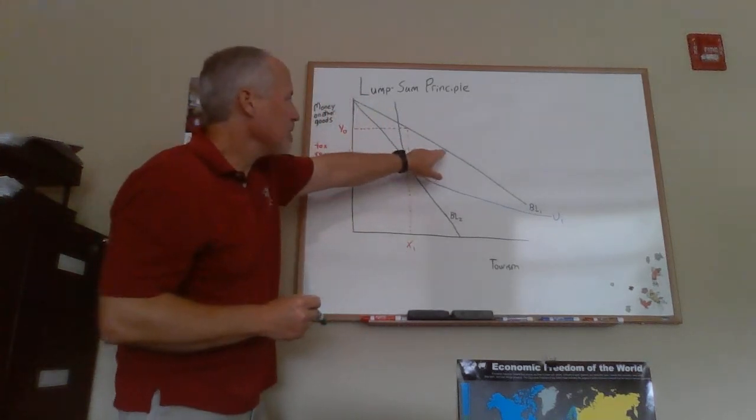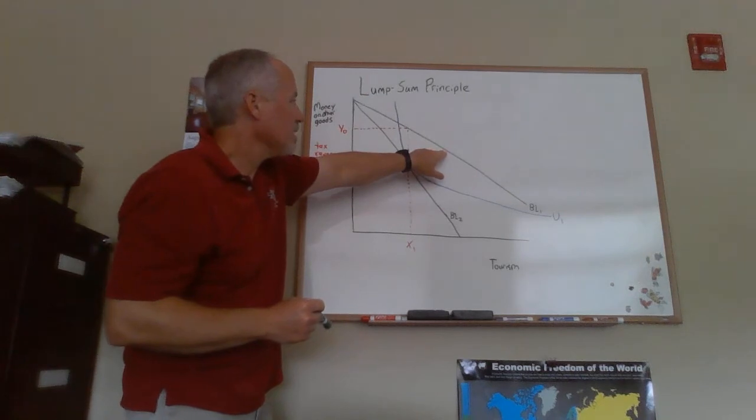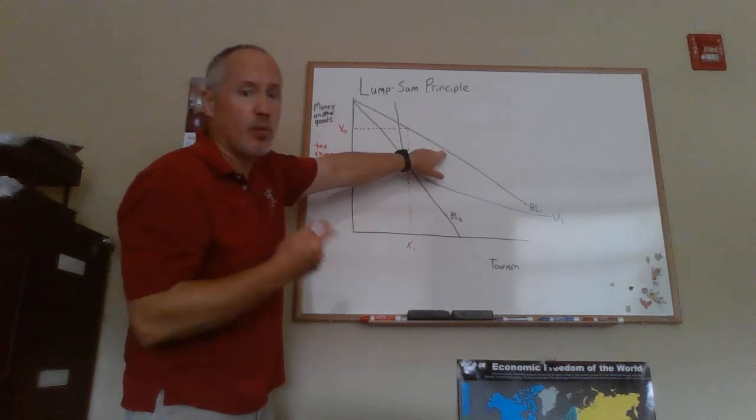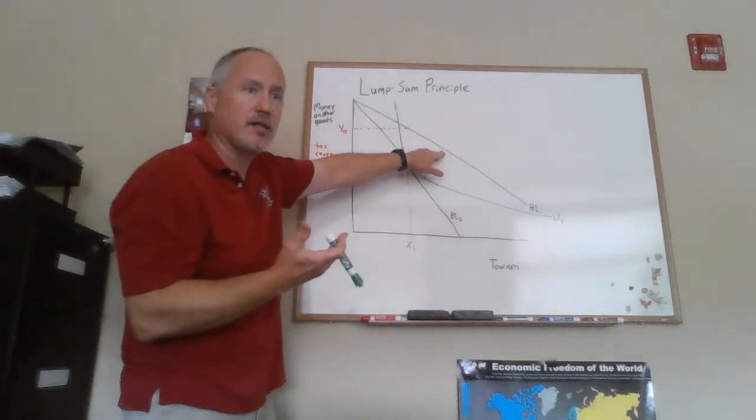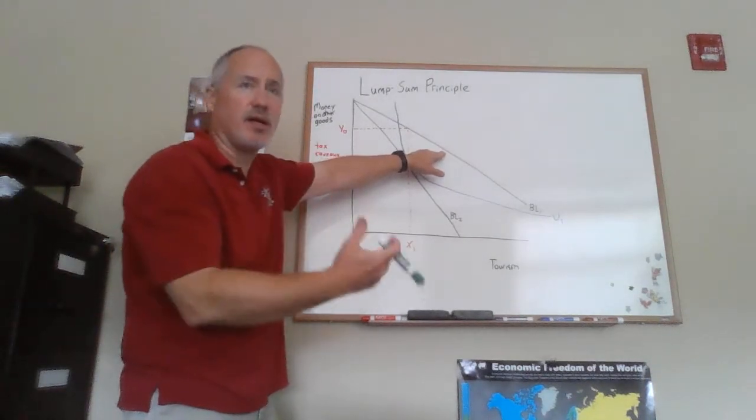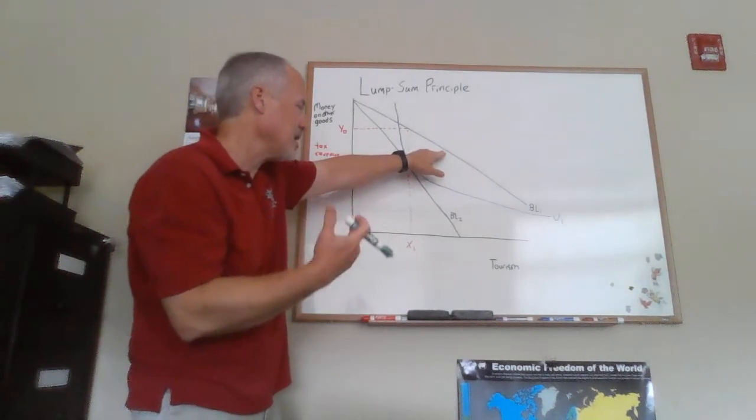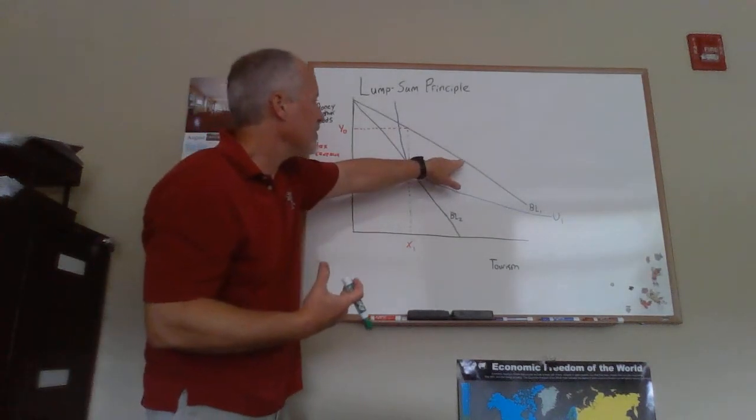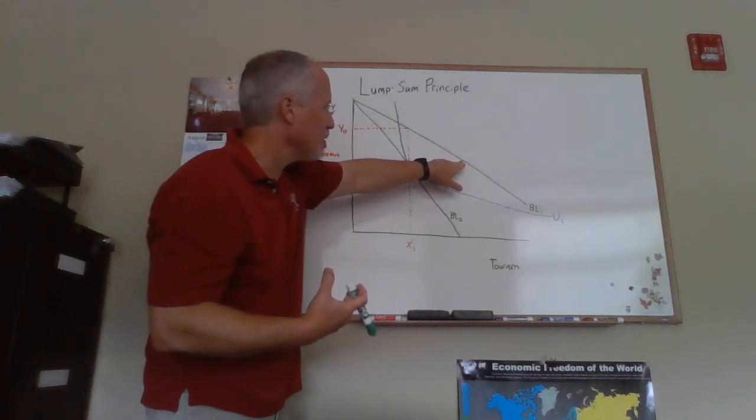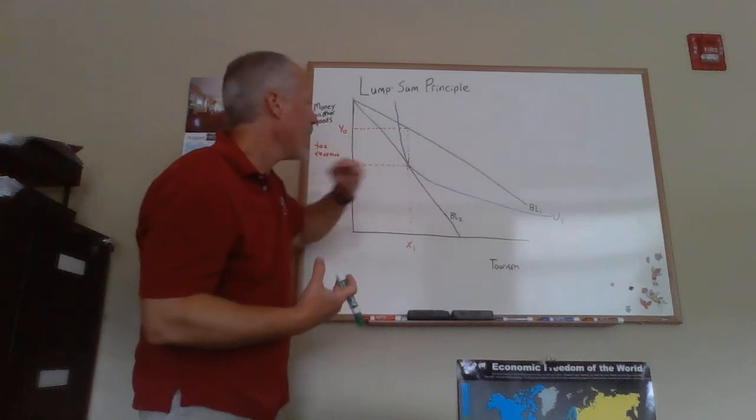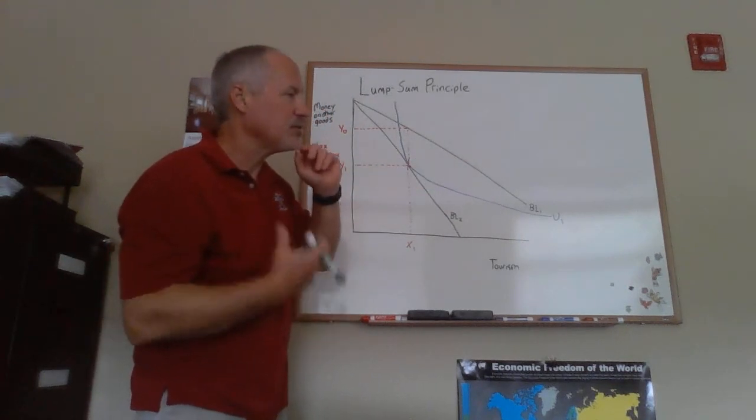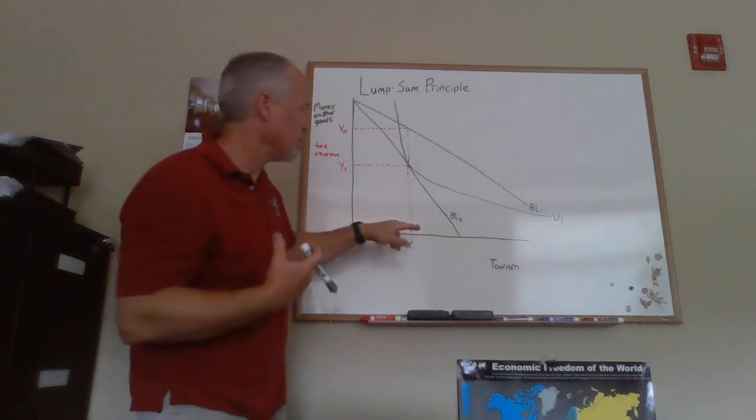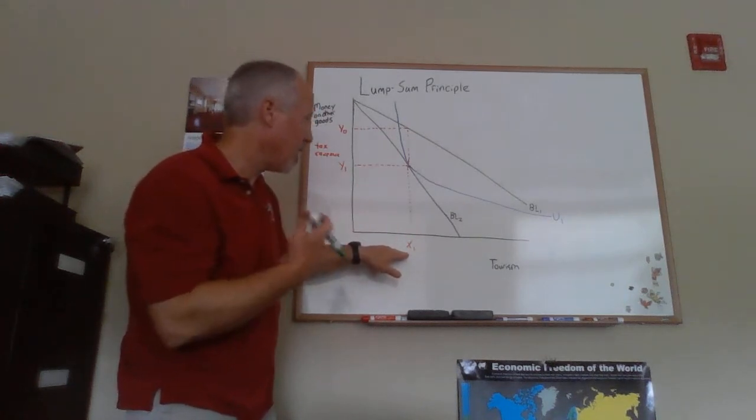If we had a lump sum tax or income tax, it would have the same slope. What we wouldn't be doing is distorting the price of tourism. We won't be putting a commodity tax on tourism and distorting the price of tourism. So we have the same slope for the BL1 budget line and we need to make sure we collect the amount of revenue that we're collecting with our commodity tax, our tax on tourism here.